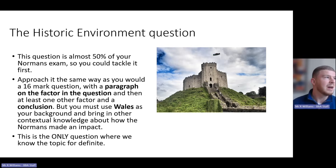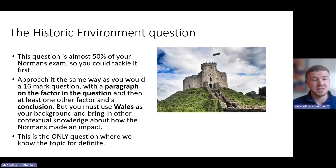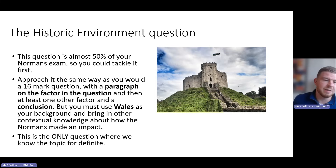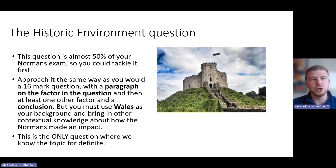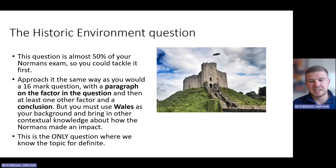In some ways it's no different from the essay questions you do in other parts of the history course. You'll be given a question with a factor in it, and you need to write one paragraph on that factor, then include at least one other factor you come up with yourself — ideally two — so you have three paragraphs covering different factors and ideas. Finish with a conclusion saying why yours is the most important. You must use Wales as your background knowledge and refer to the historic environment in the question.